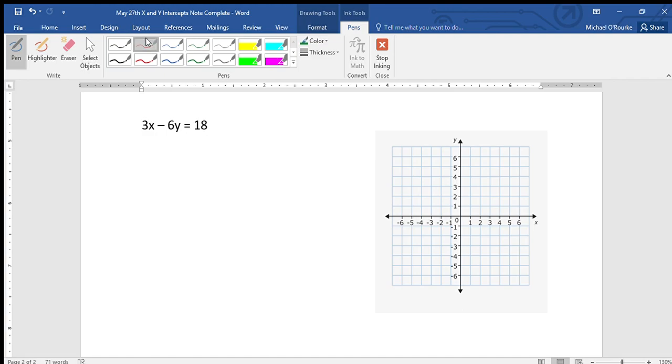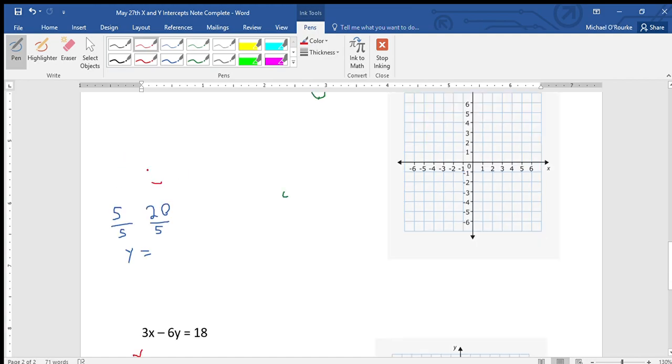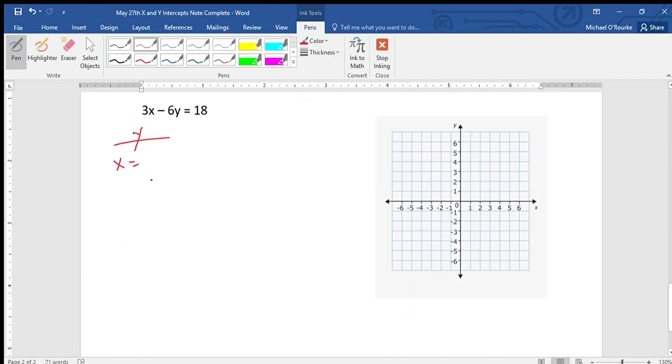Here's another one: 3x - 6y = 18. Let's find our y-intercept. My value for x at the y-intercept is going to be zero. So all I need to do is plug in that value into my equation: 3 times 0 minus 6y equals 18. That's going to equal zero, so I have negative 6y equals 18.